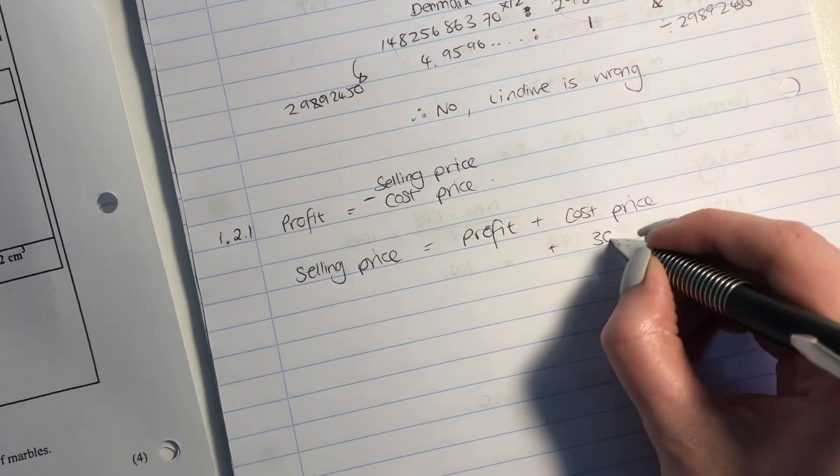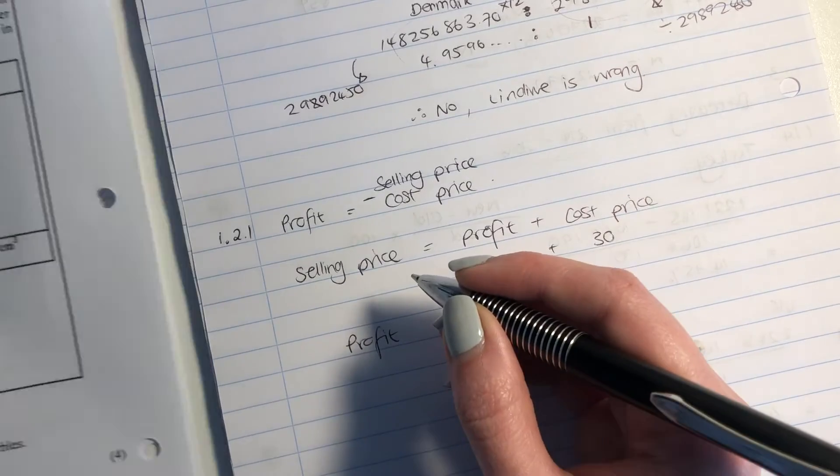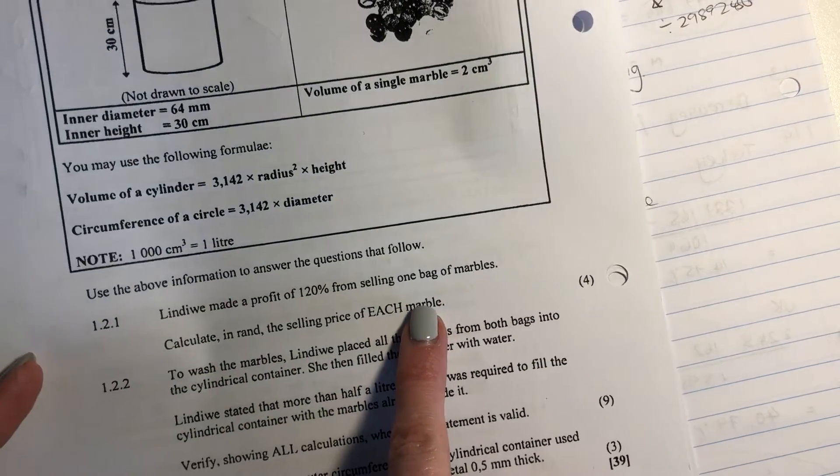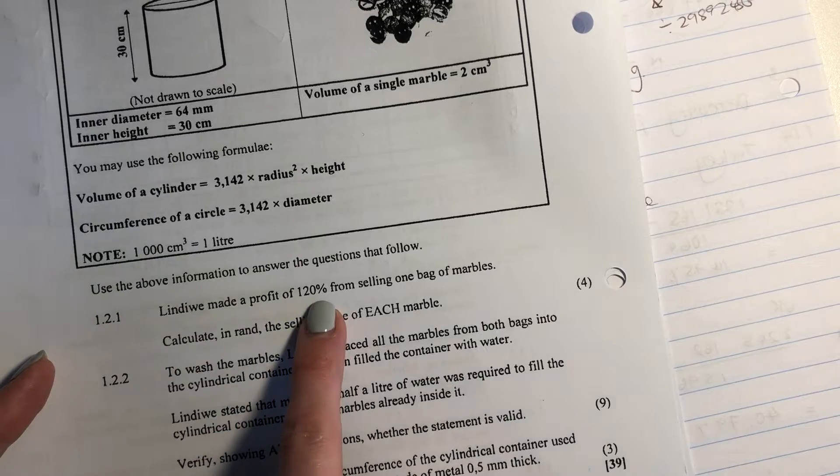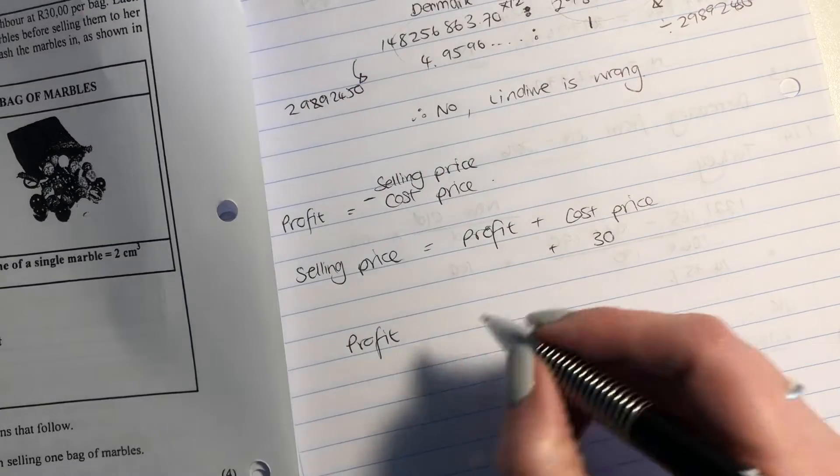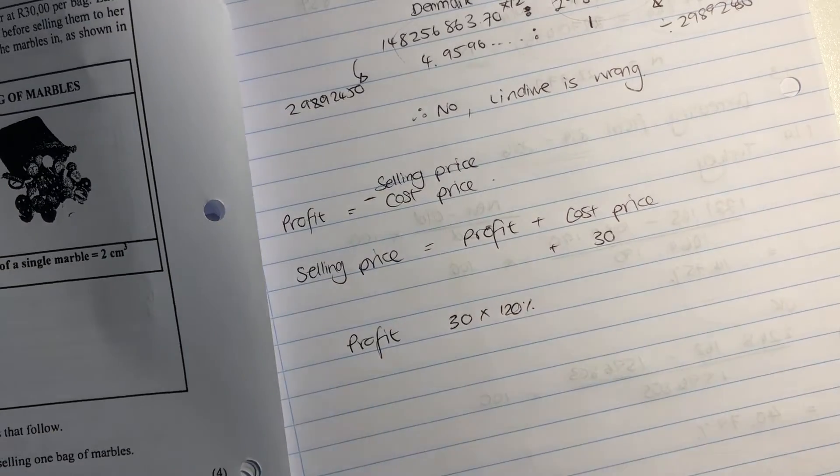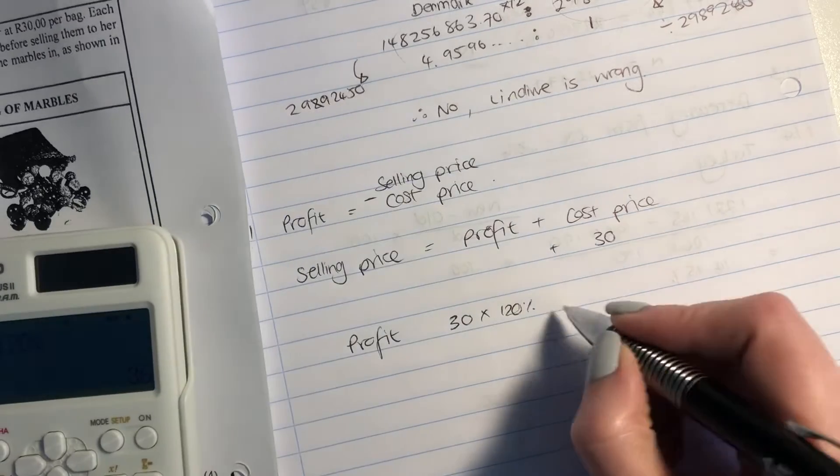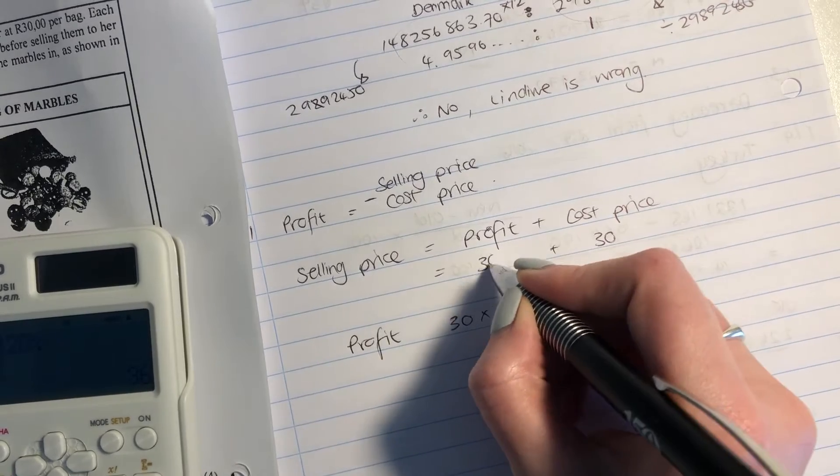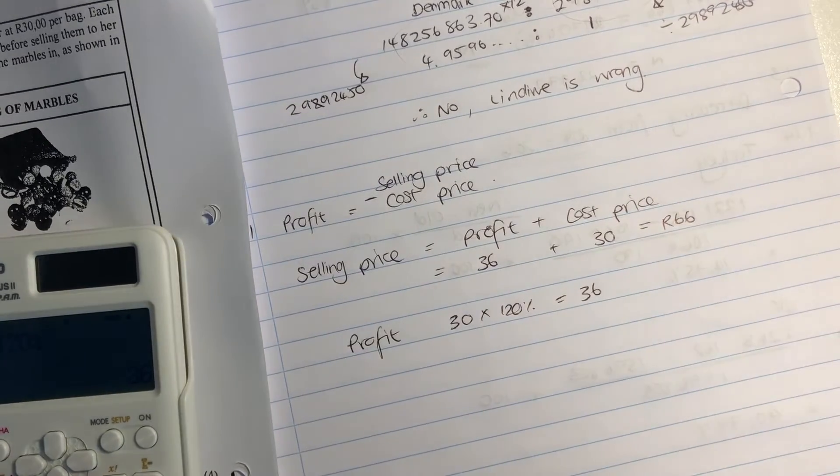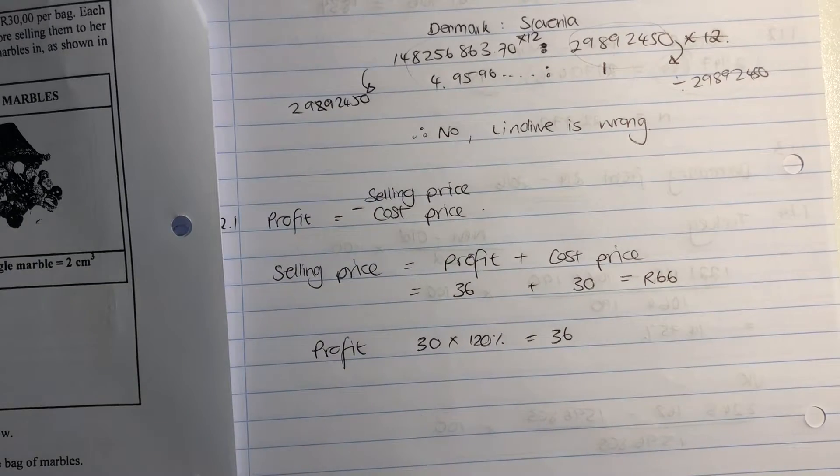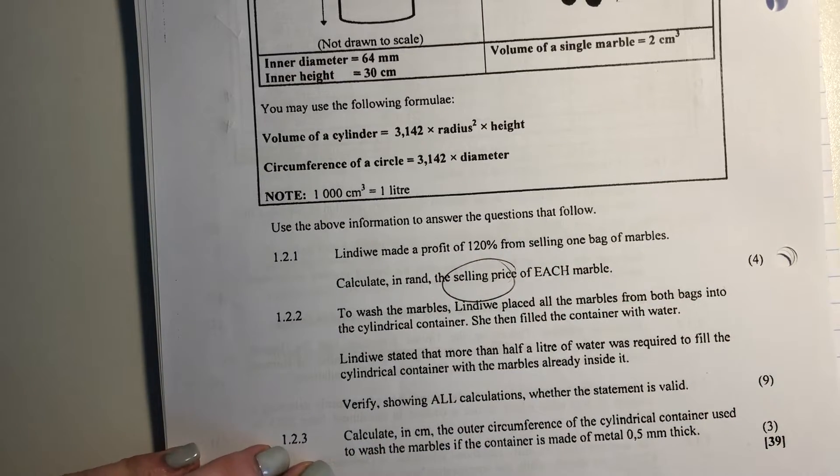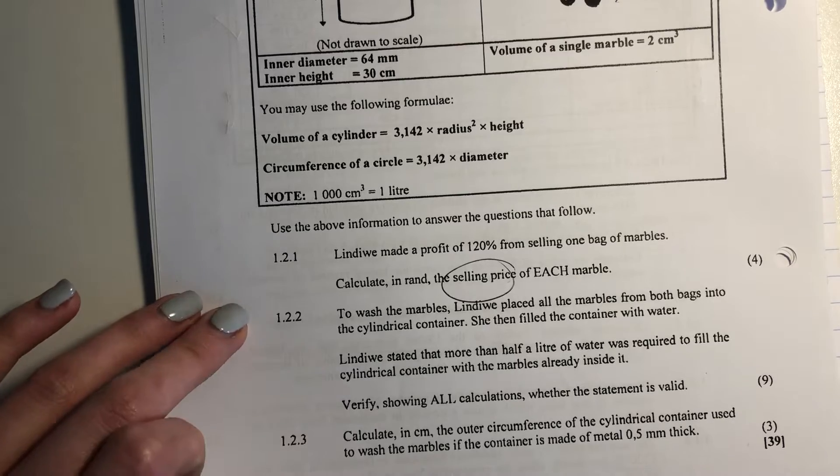So we know that my cost price is 30. We know that. But we have to work out our profits. Our profit is 120%. So it's talking about one bag. So she made a profit of 120% from selling one bag. So one bag costs 30. And we're going to times that by 120%. Put that into your calculator correctly. And that's how much profit she made. So now go put it over here. And in total, her selling price is then 66 Rand. So be quite careful about how you read this. You can't just write the profit because it didn't just ask for the profit. It asked for the selling price. So make sure that you are reading questions correctly because you don't want to miss out marks just because you're not reading correctly.